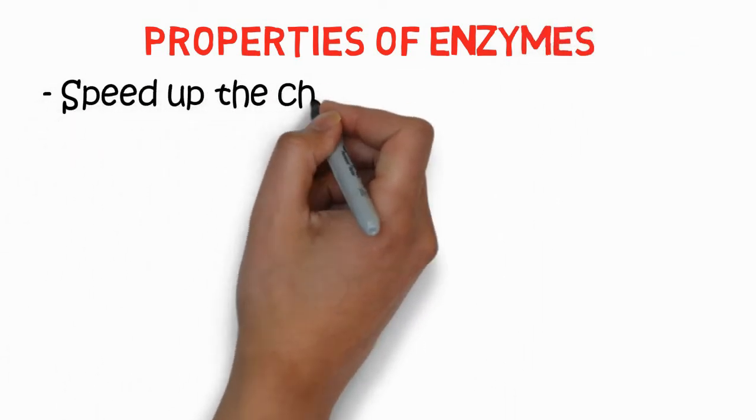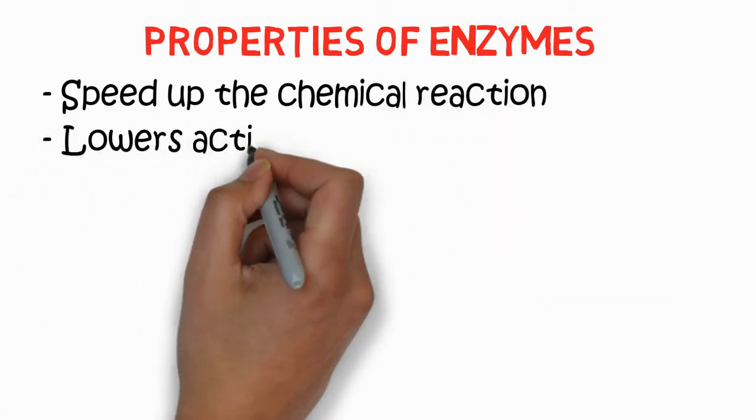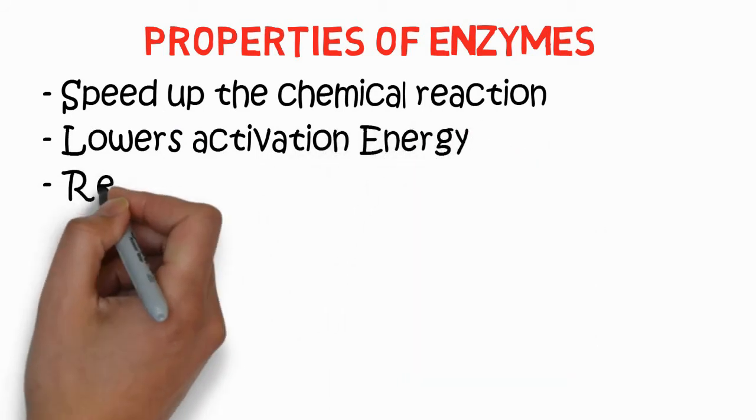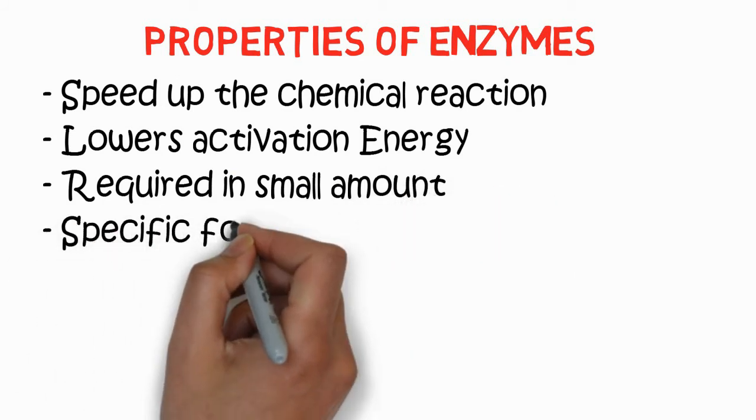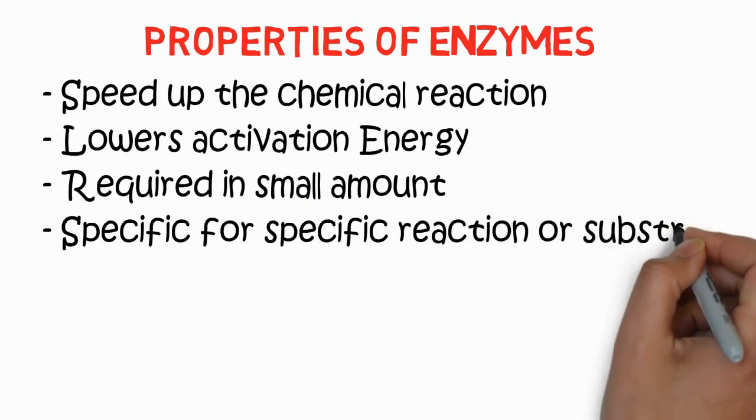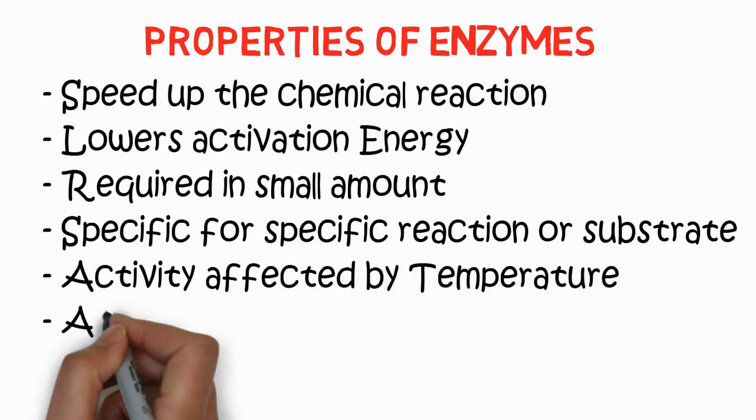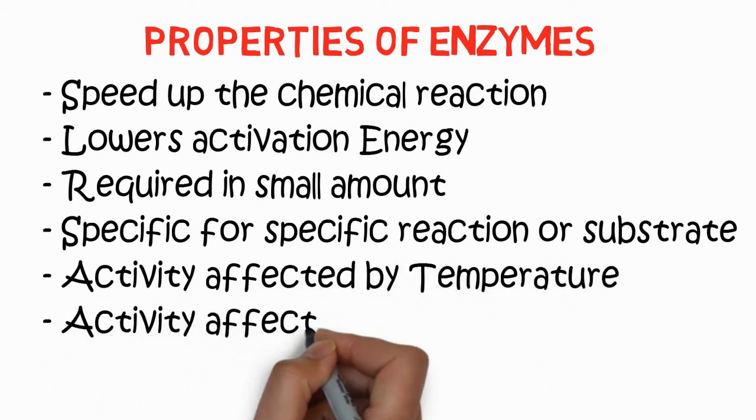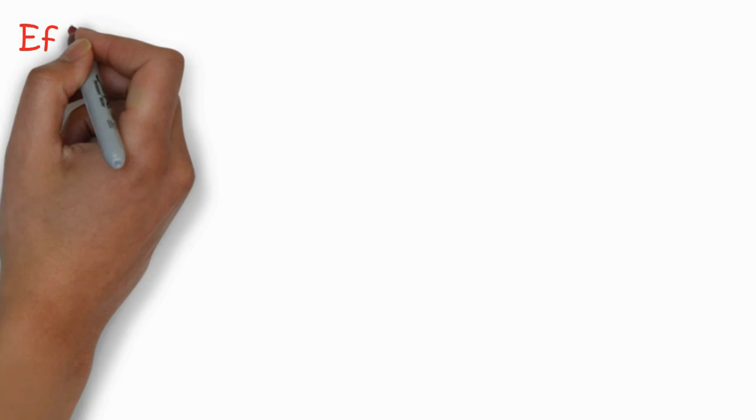Now, properties of enzymes. Enzymes speed up chemical reactions. They lower activation energy. They are required in small amounts compared to the reactants. They are specific for specific reactions or substrates. Activity is usually affected by temperature. It is also affected by pH, while they catalyze reversible reactions. These are the most important properties of enzymes.